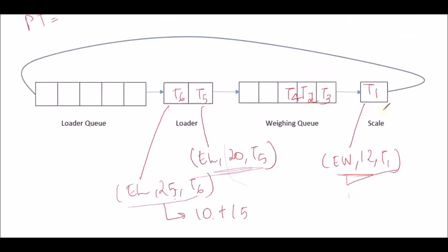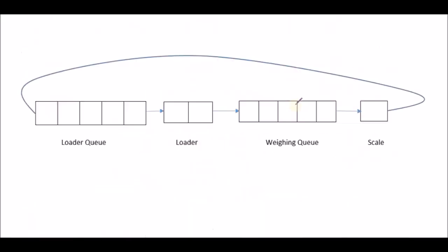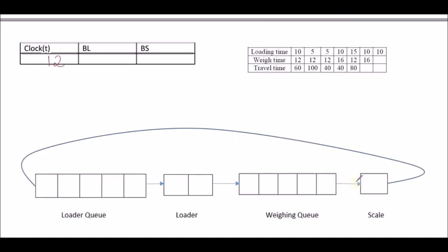At clock T=12, the imminent event is end of weighing. T1 is going to finish weighing and move out, and T3 from the weighing queue takes the scale since it's FIFO. The loaders remain the same. So T1 is in travel, the scale has T3, and the weighing queue has T2 and T4. The loaders have T5 and T6.